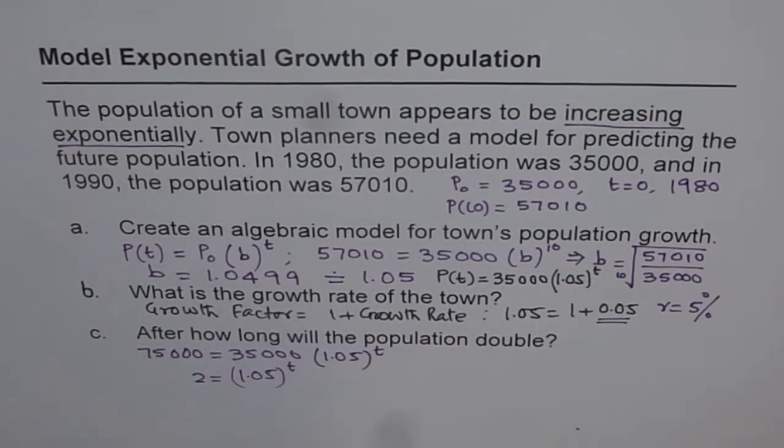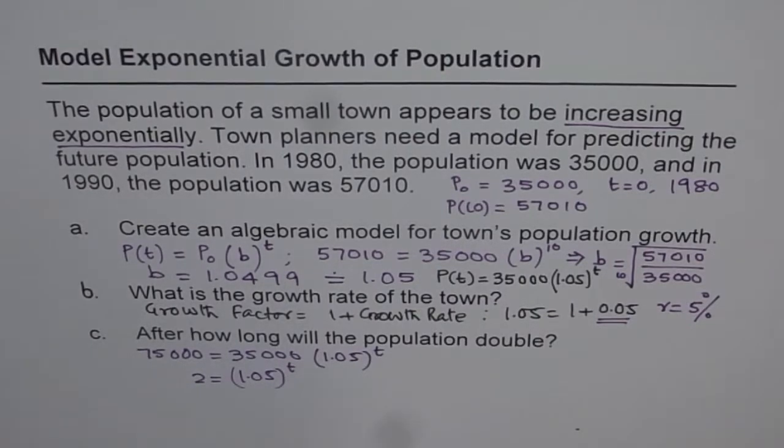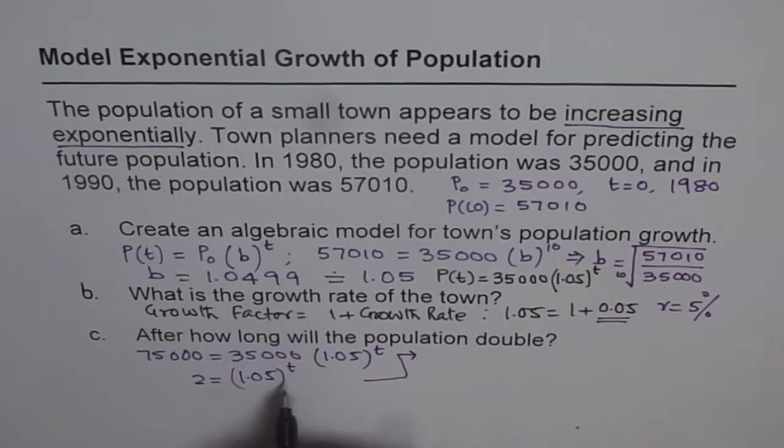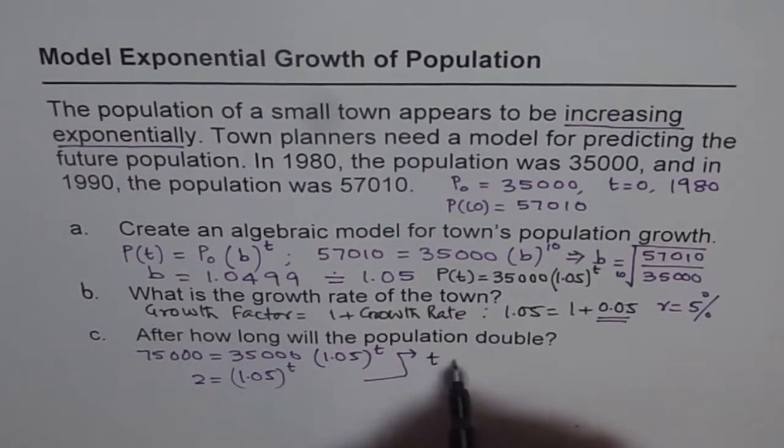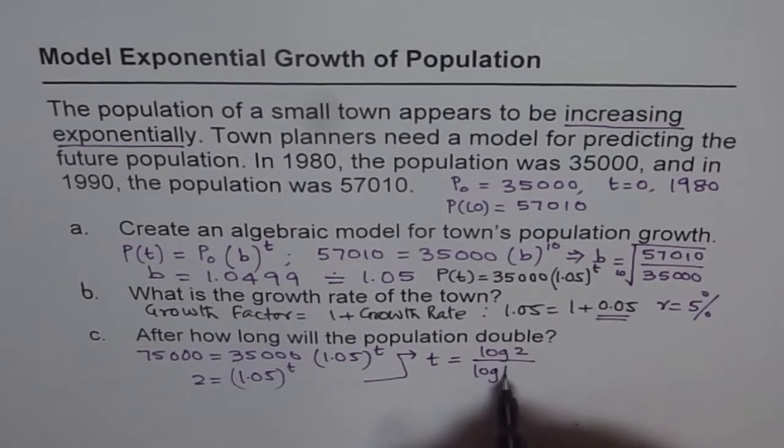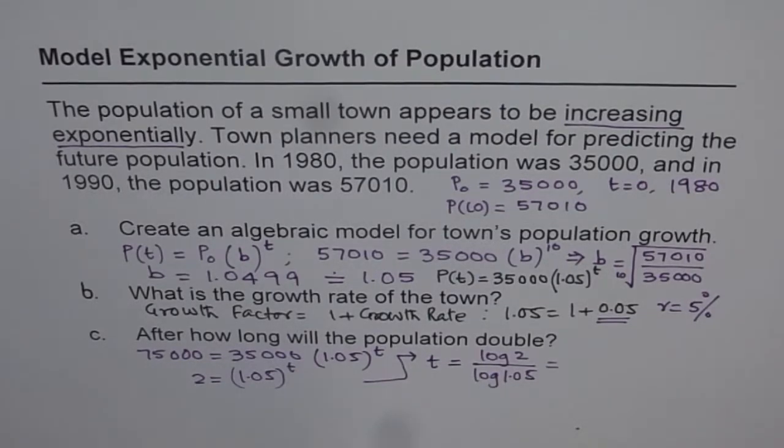Now at this stage we can get approximate value of t by assuming some values, or we can use logarithms. So let me show you with the help of log how to find t from here. With the help of log, t equals to log of 2 divided by log of 1.05. Now let us find this answer: log 2 divided by log 1.05. That is equals to 14.2.